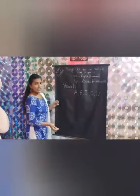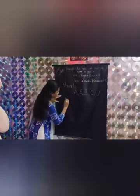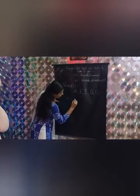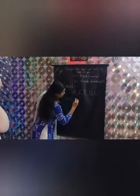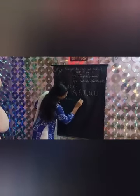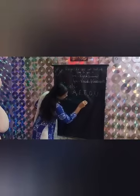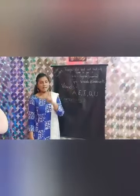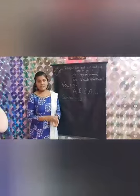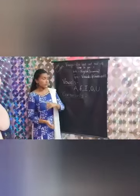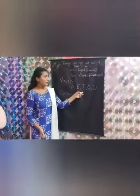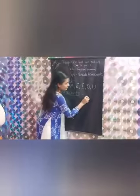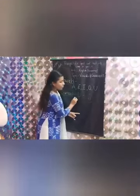So what are consonants? Now let's see. Consonants are the remaining alphabets. There are 26 alphabets, right? So in 26, we are going to remove the five vowels and the remaining 21 alphabets are consonants.